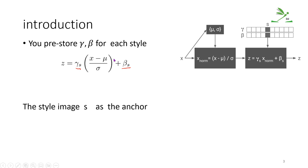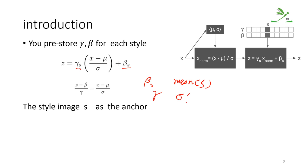By rewriting the formula, we can clearly see the relationship between the parameters. The beta of style s is analogous to the mean of s, and gamma relates to the standard deviation of s. So the previous method uses the actual learnable parameters gamma and beta to try to learn the final mean and standard deviation of the style s.